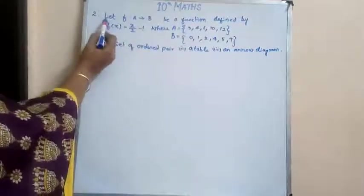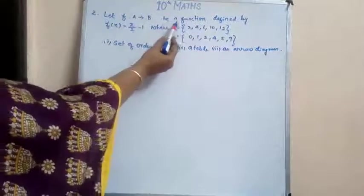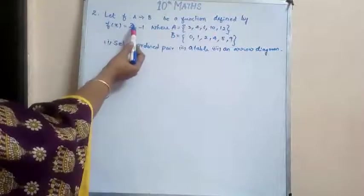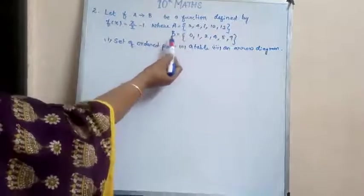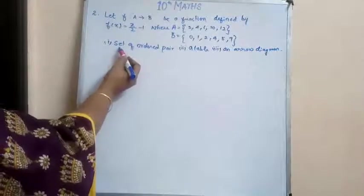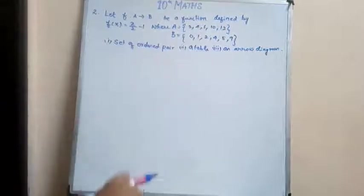Here, the next question we are going to discuss today is, let f be a function from A to B and defined by f(x) = x/2 - 1, where A is equal to this and B is equal to this. We have to represent it in set of ordered pairs, a table, an arrow diagram.